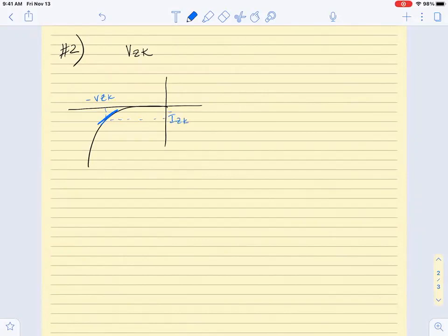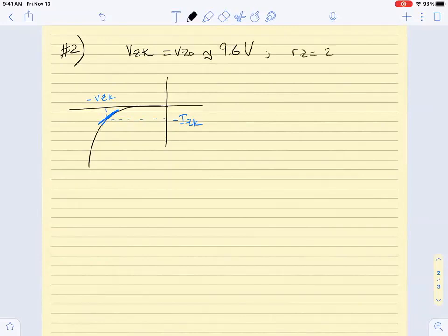Problem number two from the diode for the short quiz. We are given that for a specific Zener diode, we have that the knee voltage, Vzk, is wherever I have the knee so I will have for it Vzk and I see Izk. So here we will write minus Izk and given for this diode that the knee voltage is equal to Vz0 which is approximately 9.6 volts.